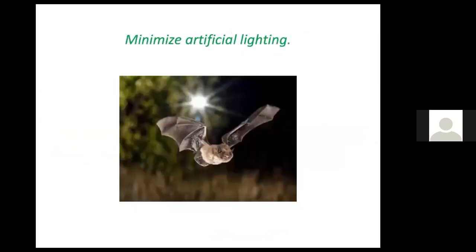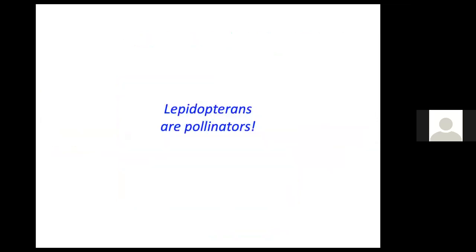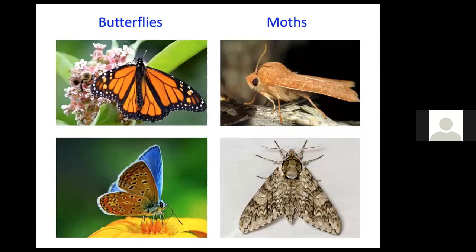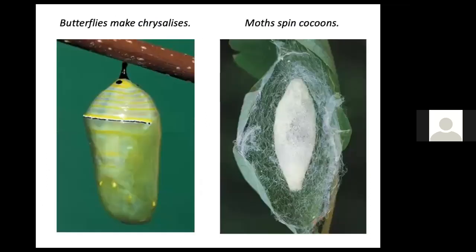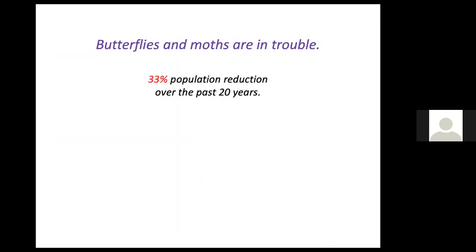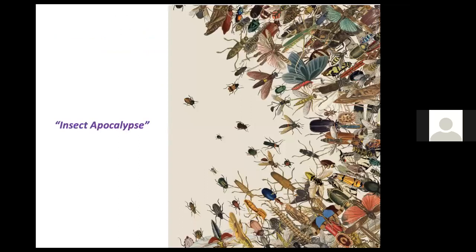Now let's talk about the lepidopterans — butterflies and moths. They are pollinators. Moths are active at night while butterflies are active during the day; butterflies are usually more colorful, though there are exceptions. Moths are actually 20 times as numerous as butterflies in nature, but we don't see them as much because we're not outside at night. Butterflies have club-tipped antennae compared to moths' more feather-like antennae. Butterflies make chrysalises; moths spin cocoons. Butterfly populations were observed to decline by 33% in a study in Ohio in just two decades, due to habitat loss, pesticides, and climate change.